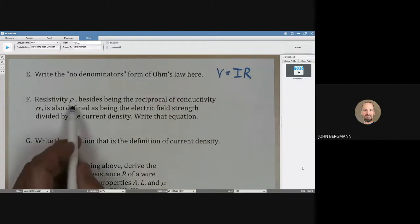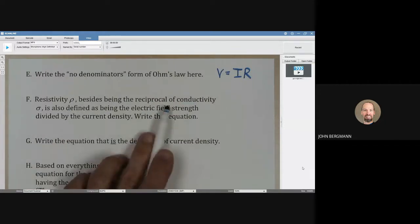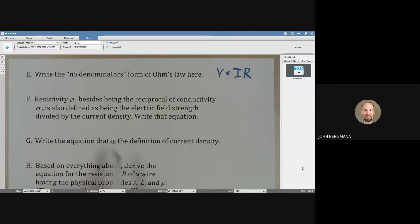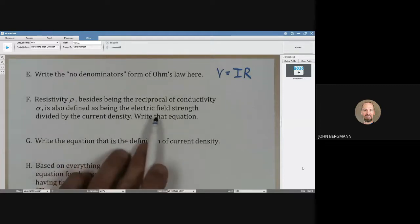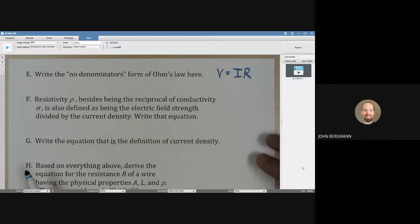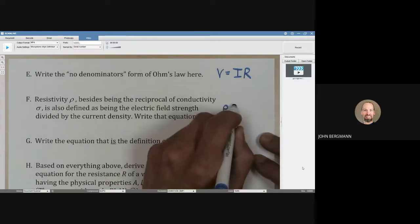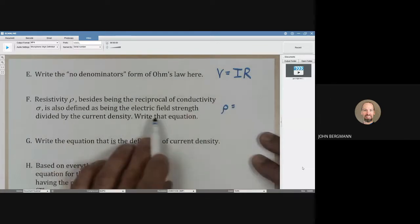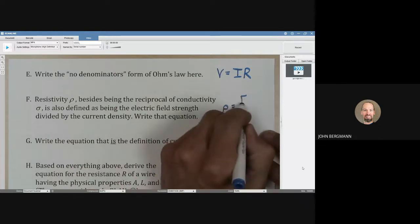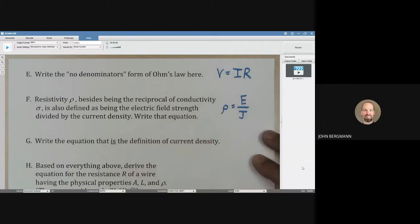Resistivity rho, besides being the reciprocal of conductivity, is also defined as being the electric field strength divided by the current density. Write that equation. Resistivity is also defined as being the electric field strength divided by the current density, which has the variable J.